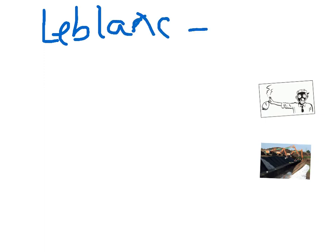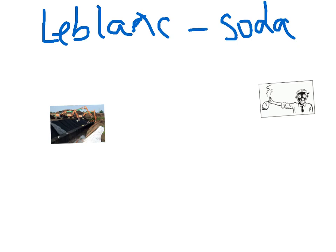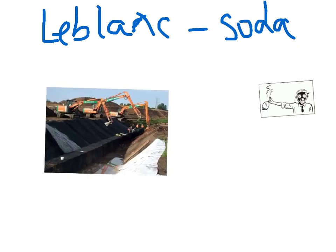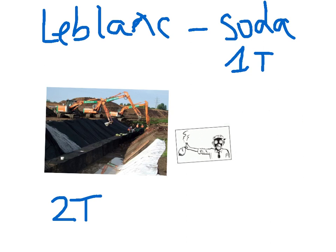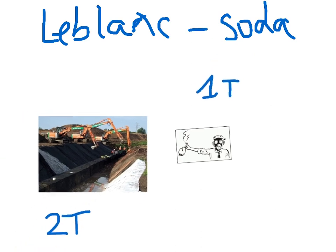The Leblanc process produced sodium carbonate, otherwise known as soda, which is a useful alkali. But it also produced pollutants. The first pollutant was called galigo. Galigo is a solid material, and for every one tonne of soda, approximately two tonnes of galigo were formed. Galigo itself doesn't seem very harmful — it just sits on the land — and they used to bury it or put it on specialised sites. However, galigo releases, after time, a chemical called hydrogen sulfide.